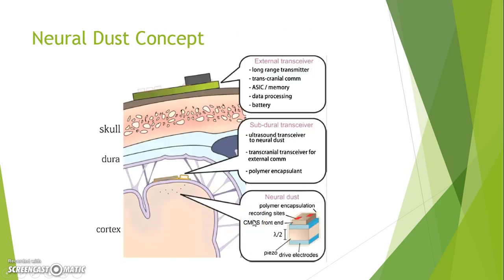Let's now learn about the neural dust system as proposed in the original 2013 article. This figure shows how the system is placed and the purpose of each device. On the outside we have an external transceiver with long-range transmitter, transcranial communication, ASIC, memory, and data processing. Inside the skull, we have a subdural transceiver, also called the interrogator, since it communicates with the neural dust. It includes an ultrasound transceiver to neural dust, transcranial transceiver for external communication, and is encapsulated with polymer.